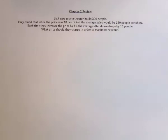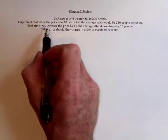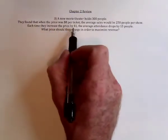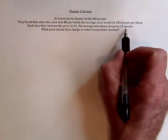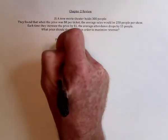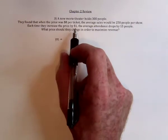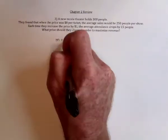And here's an application for a quadratic function. Each time they increase the price of the movie theater tickets by a dollar, the average attendance is going to drop by 15 people. That's basically describing that the relationship between the price and the number of people is linear and its slope is negative 15.